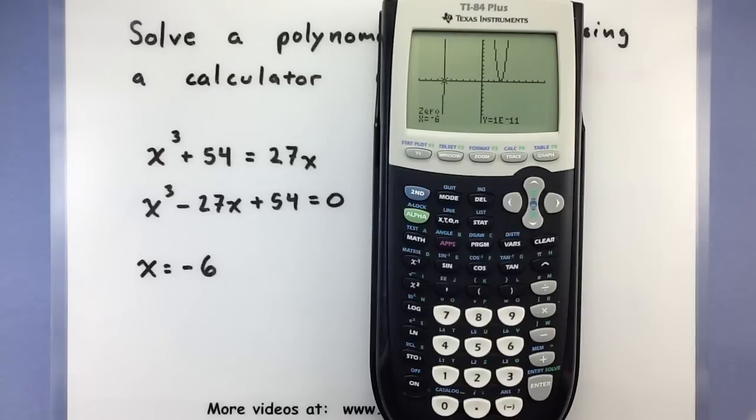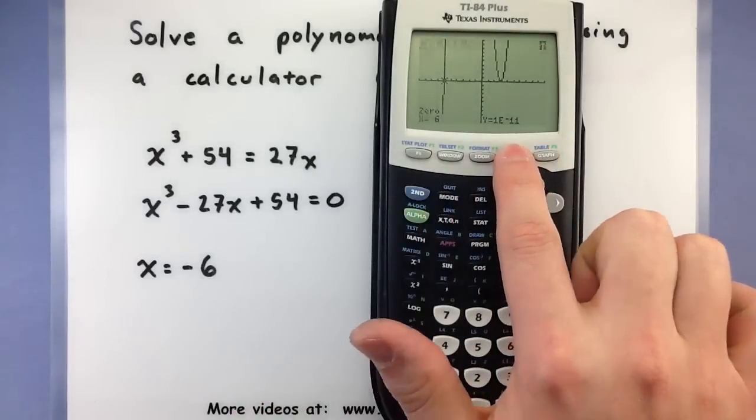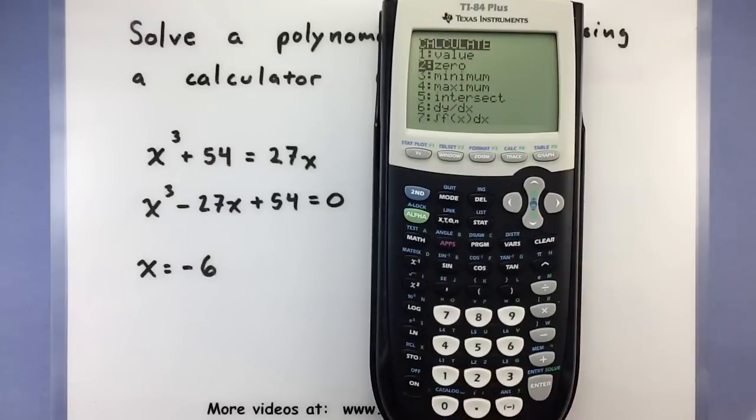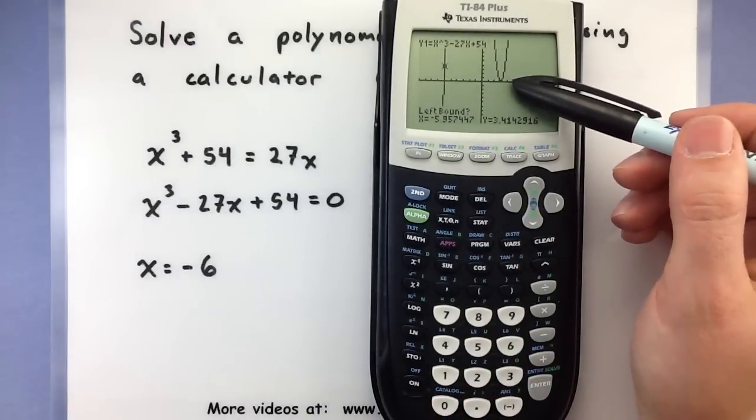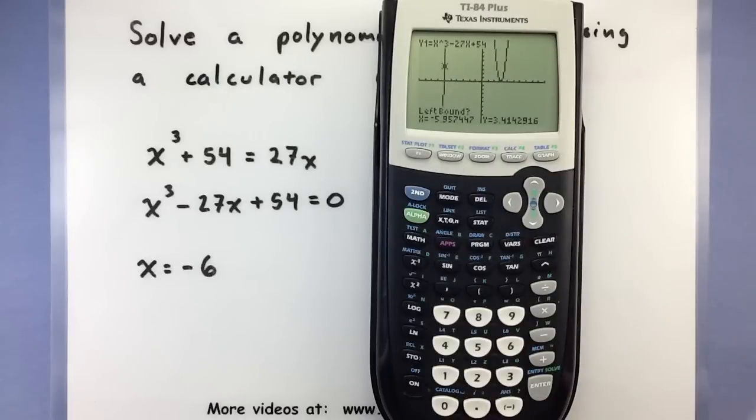Now let's go through this process again to see if we can find the other one. So second, calc, go down to zero, and enter. So we need to choose a left bound, a right bound, and a guess for this one over here. This one looks like it's probably around 3. So for my left bound, I will choose 2, something to the left of 3.